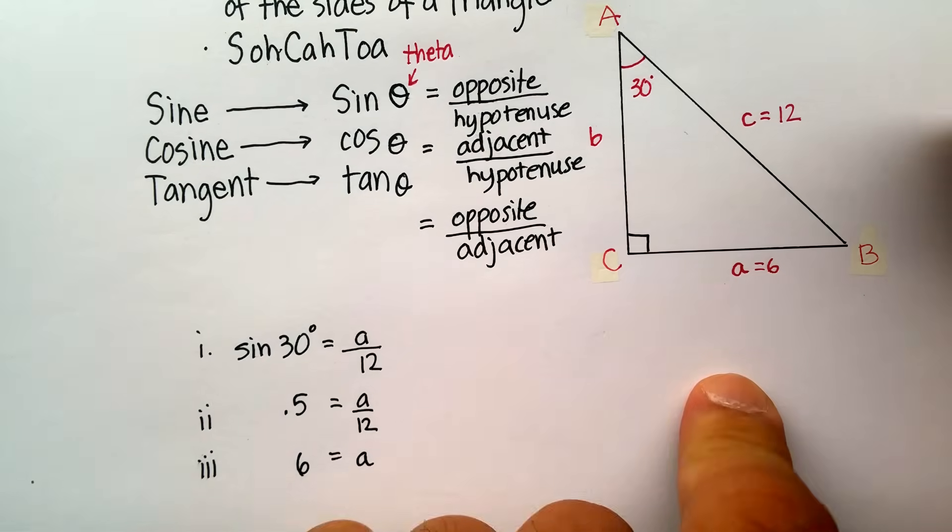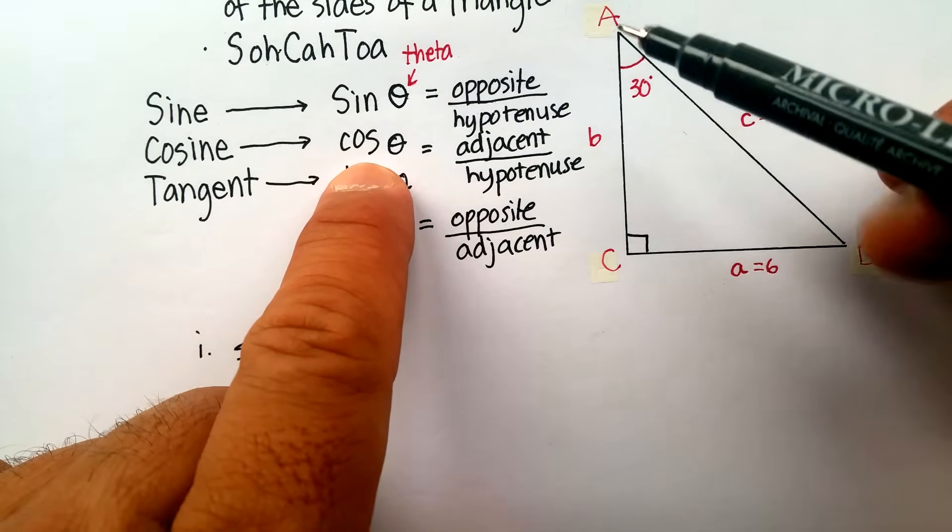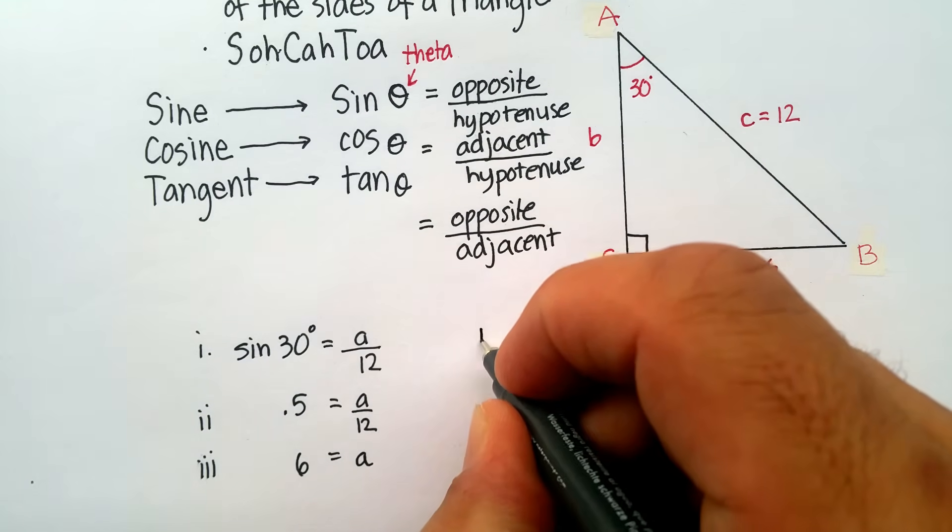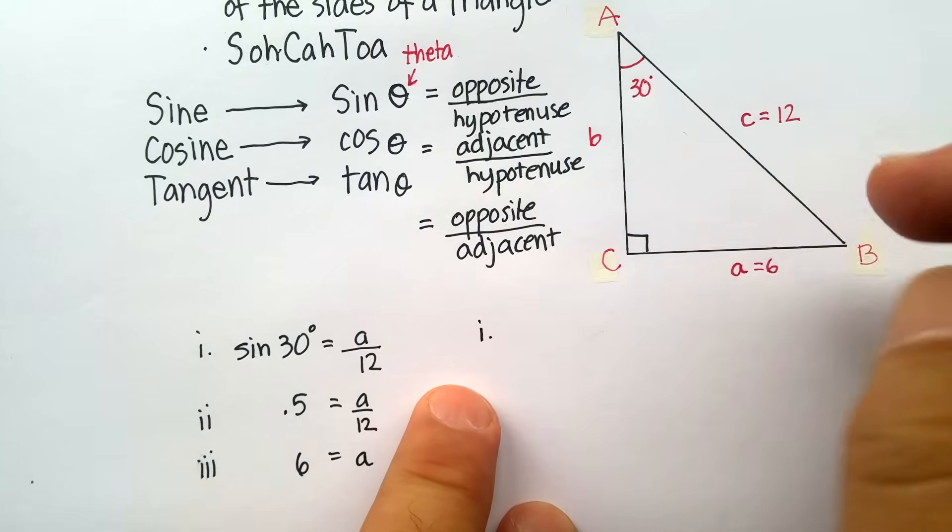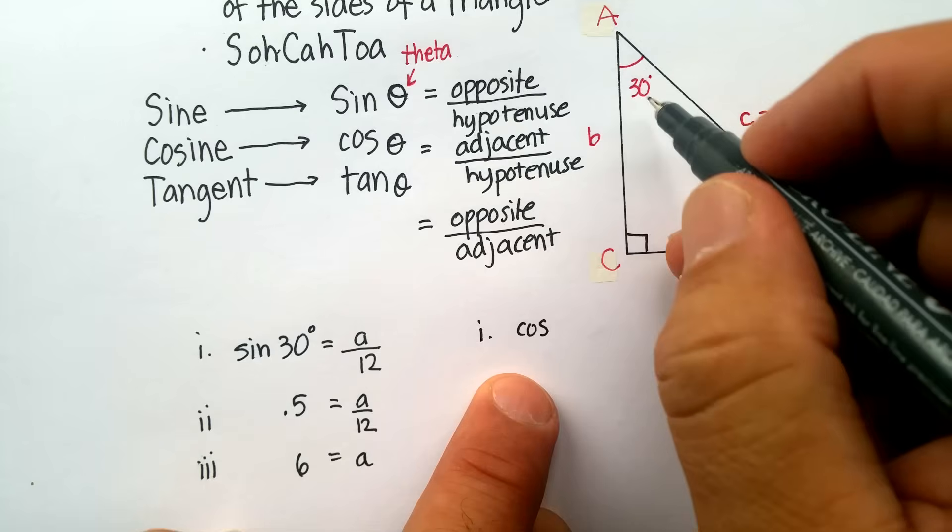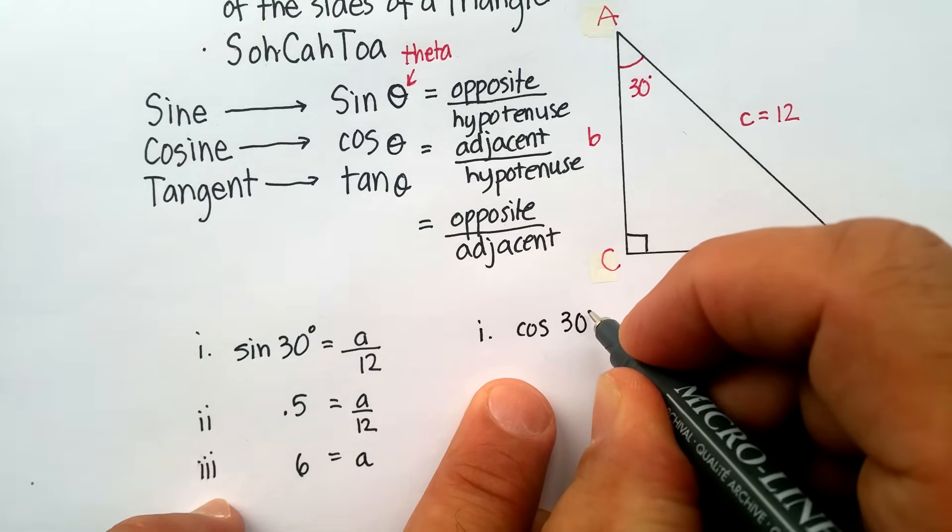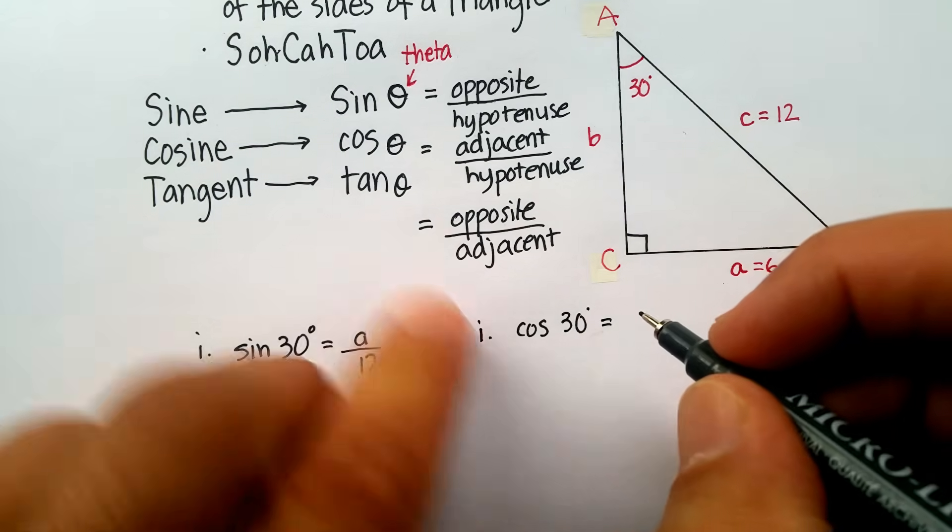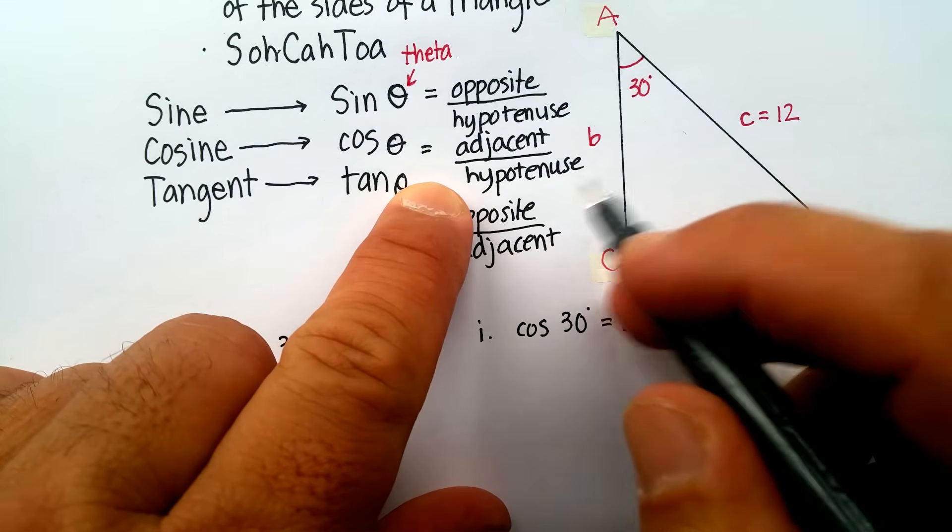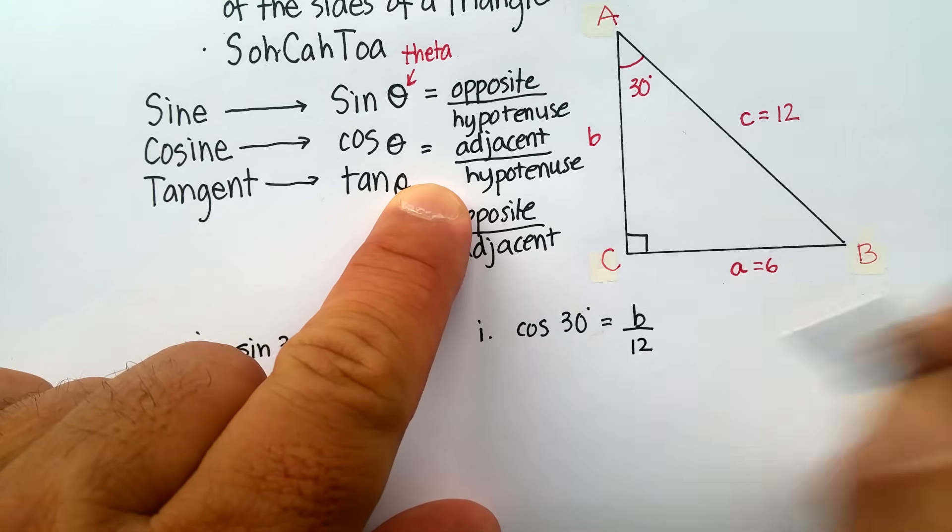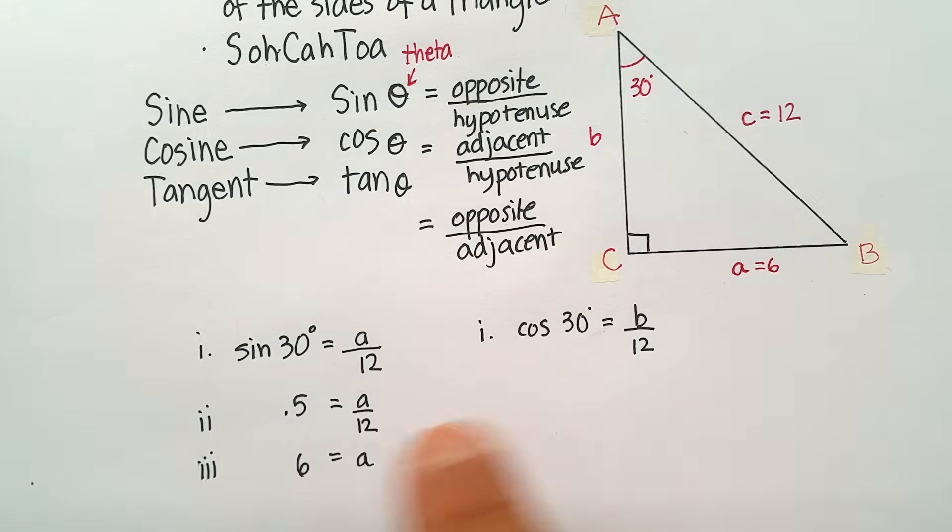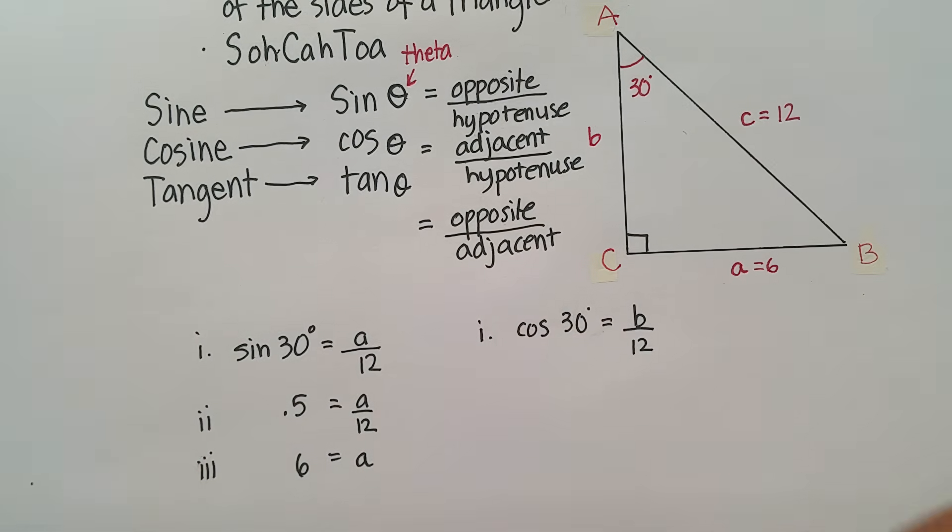Now let's say that I wanted to find side B. I have two ways of doing it, right? I can actually use the cosine or I can use the tangent. And it really doesn't make any difference which one you use. Just make sure you use something that you have enough information for. So let's just go with cosine. So let's say cosine of 30 degrees should be equal to the adjacent side, which is B, over the hypotenuse, which again we know is 12, right?